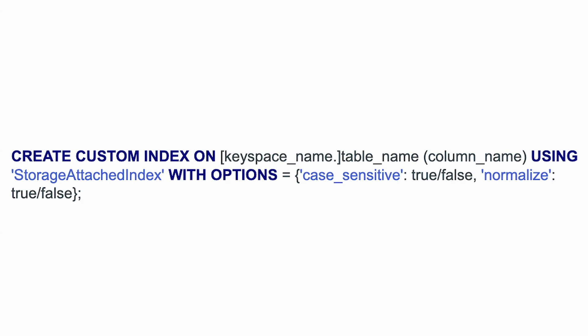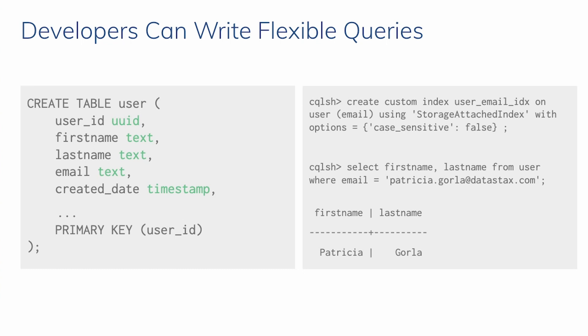We can choose to normalize text based on Unicode standards, meaning that any special characters will become normalized, and you'll be able to access text in a familiar way. So let's go back to our previous user example. If we were to create a custom index, all that we would do is use CREATE CUSTOM INDEX, name our index, and add in the storage attached index keyword along with our options. Then when we go to select the information that we inserted, we would get back the information that we were looking for.